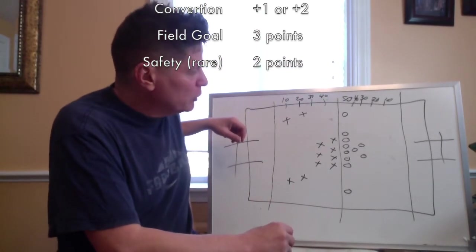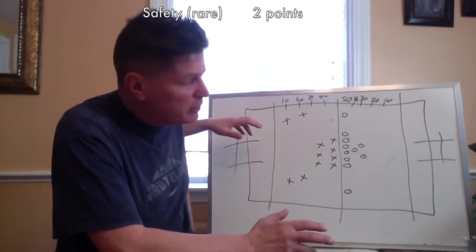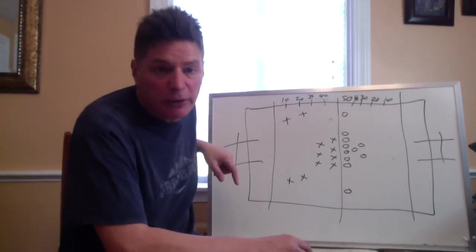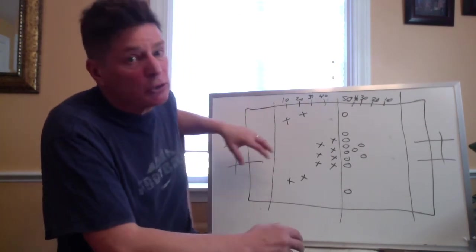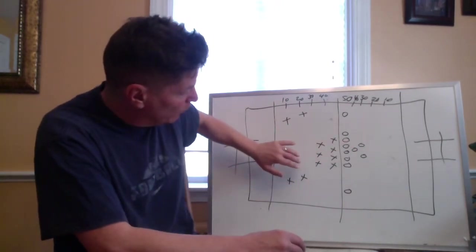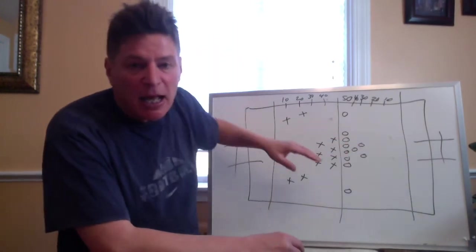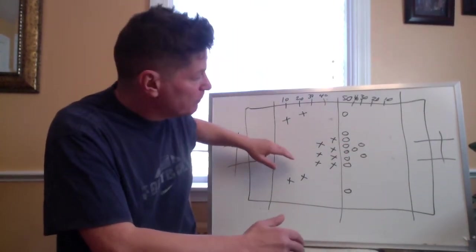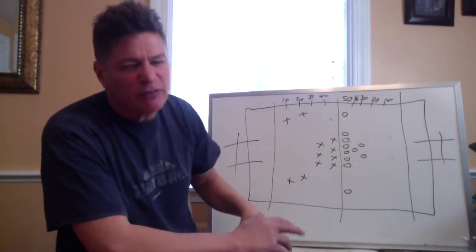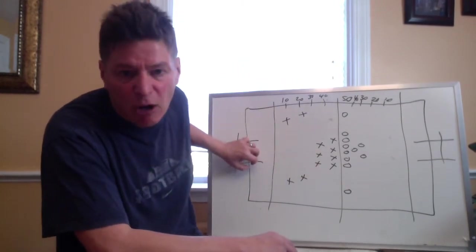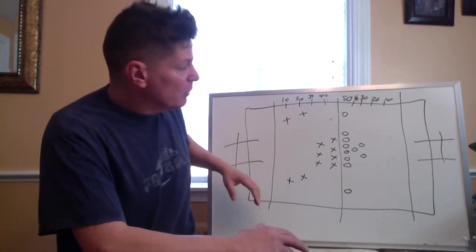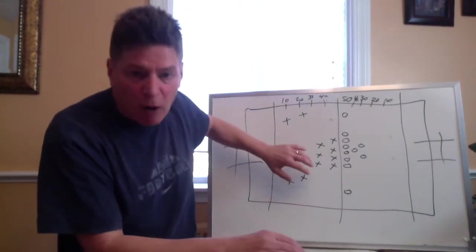You also have field goals. Field goals is when you don't think you're gonna make a touchdown—you kick it, and if it goes through the uprights then it's three points. You have other situations like an interception where this team is in offense and let's say these guys throw the ball and one of these guys catches the ball and runs it back—they can get a touchdown and then they get a chance for conversion. In very rare situations where the team is stuck in their own end zone, they could lose two points as well.